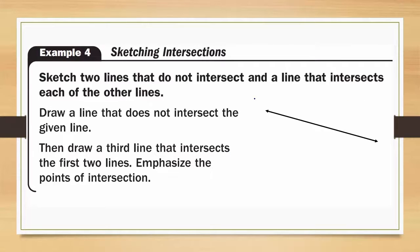Example four, sketching intersections. Sketch two lines that do not intersect and a line that intersects each of the other lines. First, we have to draw a line that does not intersect the given line. So that's my line that does not intersect the given line. Then draw a third line that intersects the first two lines. Emphasize the points of intersection. Here's a line that intersects the first two lines and our points of intersection are here and here.